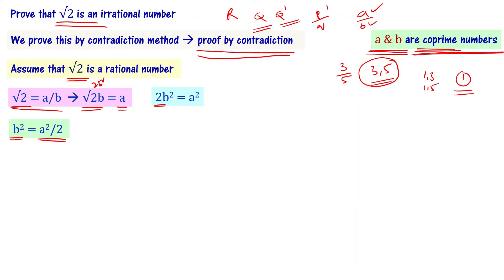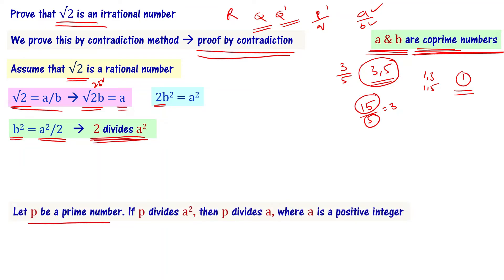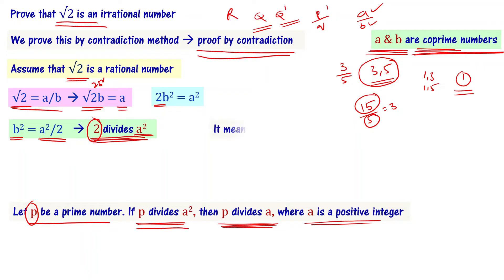This means that 2 divides A squared. Now recall this theorem: let P be a prime number. If P divides A squared, then P divides A, where A is a positive integer. Since 2 is a prime number and 2 divides A squared, then 2 can also divide A.